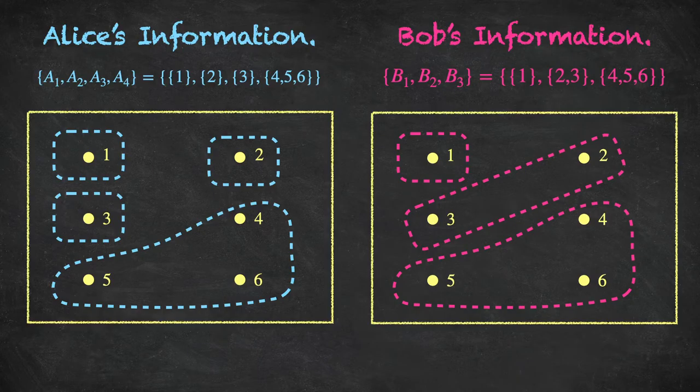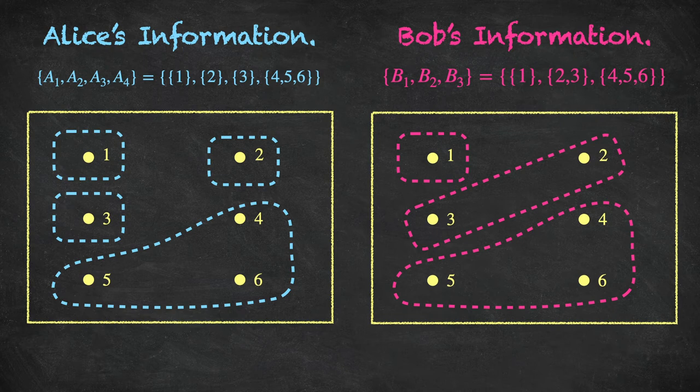Having better information means having a finer partition. If one person's information structure is a finer partition of the state space than another's, they have better information. When one person has better information than the other — either way round — we say there is asymmetric information. If two people have different information but neither information structure is finer, then we say there is heterogeneous information. Let's have a look at some examples.